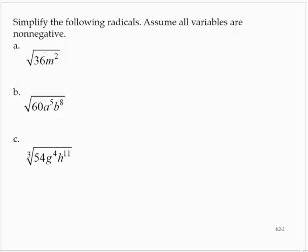Simplify the following radicals. Assume all variables are non-negative. The square root of 36 m to the second.